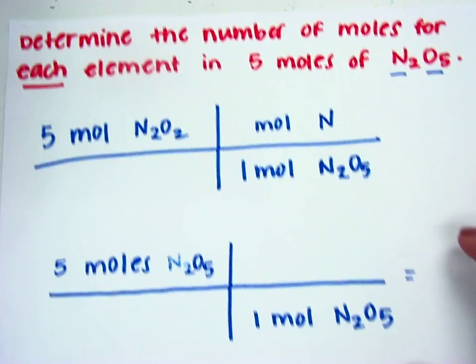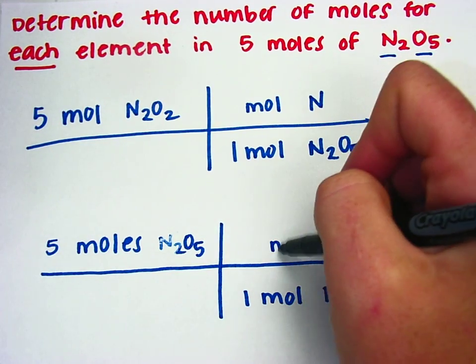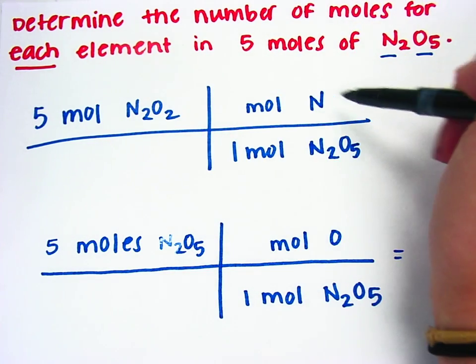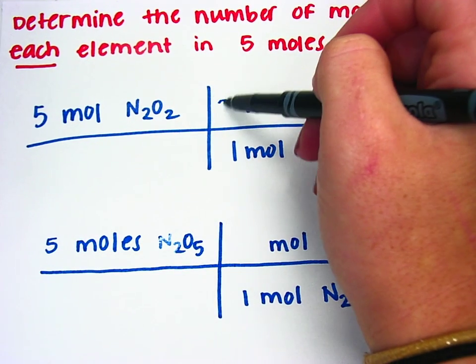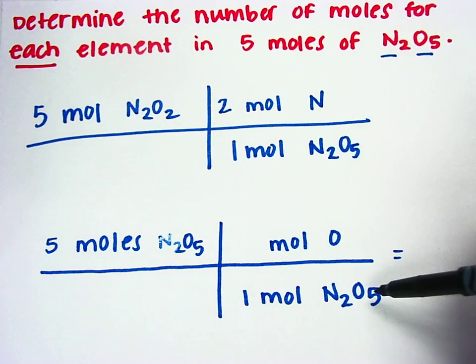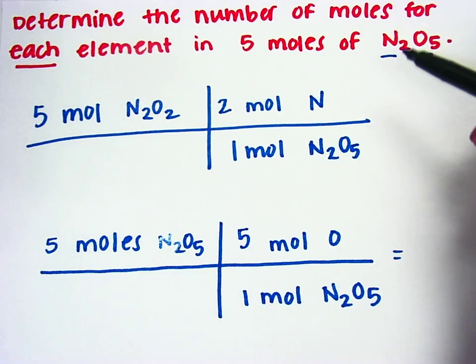And then you'll do the same thing again for moles of oxygen. There are 2 moles of nitrogen in this problem, and I know that because there's a little 2 right here. And there are 5 moles of oxygen. You know that because there's a 5.